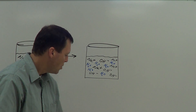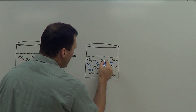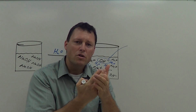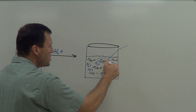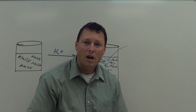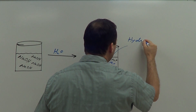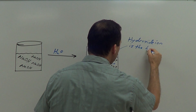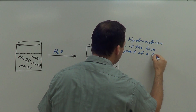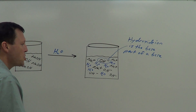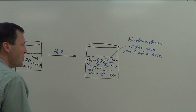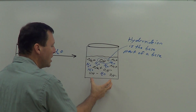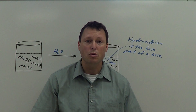What makes this a base? It turns out what makes this a base is the hydroxide ion. This is a polyatomic ion — it consists of an oxygen bonded to a hydrogen atom, and it has an additional electron as part of it. This hydroxide ion is the base part of a base solution. Different basic solutions have different cations, but what do all basic solutions have in common? They have these hydroxide ions. The more hydroxide ions you have in a given volume of solution, the more basic that solution is going to be.